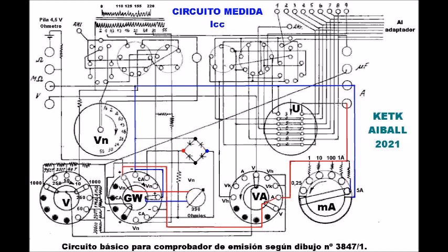El polo activo del amperímetro es el cuarto polo a la derecha de la imagen y es positivo, y el polo común es el tercer polo de la derecha y es negativo. El polo activo A, cuando recibe una corriente externa, pasa al conmutador de escalas MA.